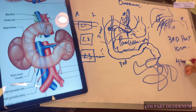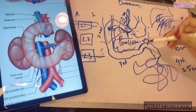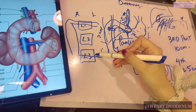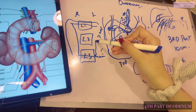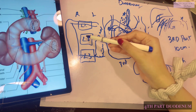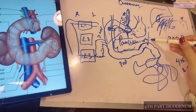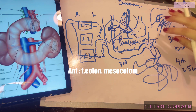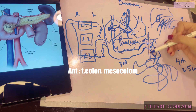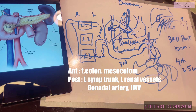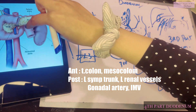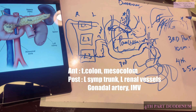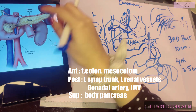The fourth part is the shortest, about 2.5 centimeters in length. It begins at the left border of L3 and moves upward to L2, after which it continues as the duodenojejunal flexure where the jejunum starts. Anteriorly lie the transverse colon and transverse mesocolon. Posteriorly lie the left sympathetic chain and the left renal vessels. The left gonadal artery and the inferior mesenteric vein are also in relation here. Superiorly lies the body of the pancreas.